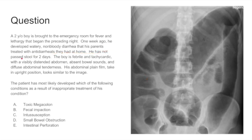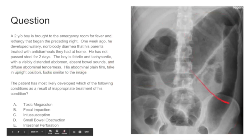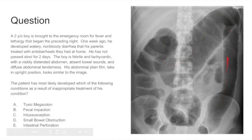He has not passed stool for two days. The boy is febrile, tachycardic, and has a visibly distended abdomen, absent bowel sounds, and diffuse abdominal tenderness. His abdominal plain film, seen right here — what do you guys think this is?